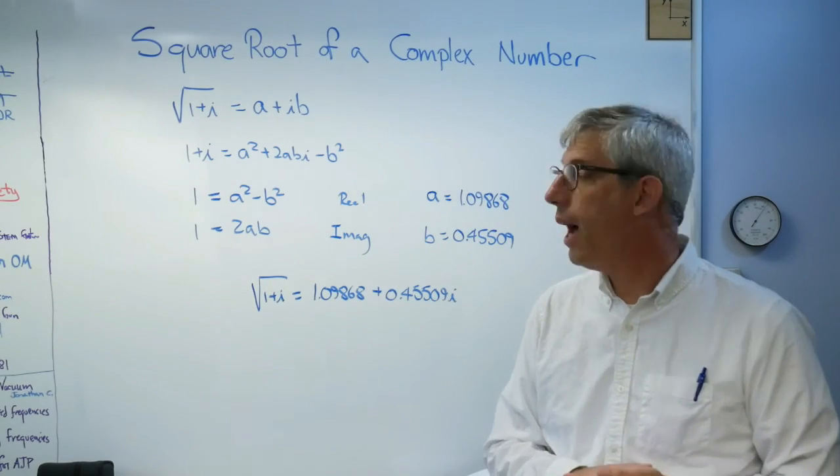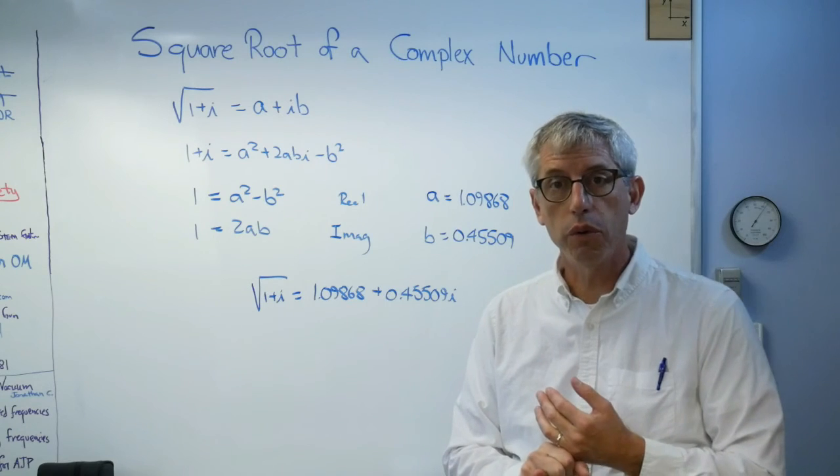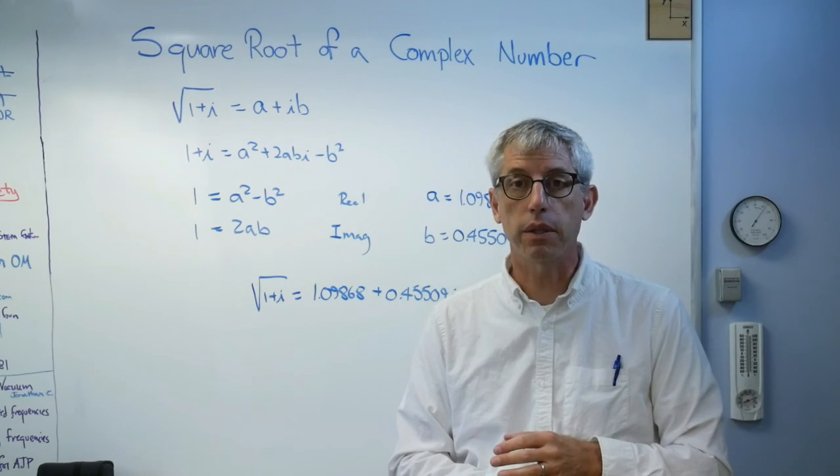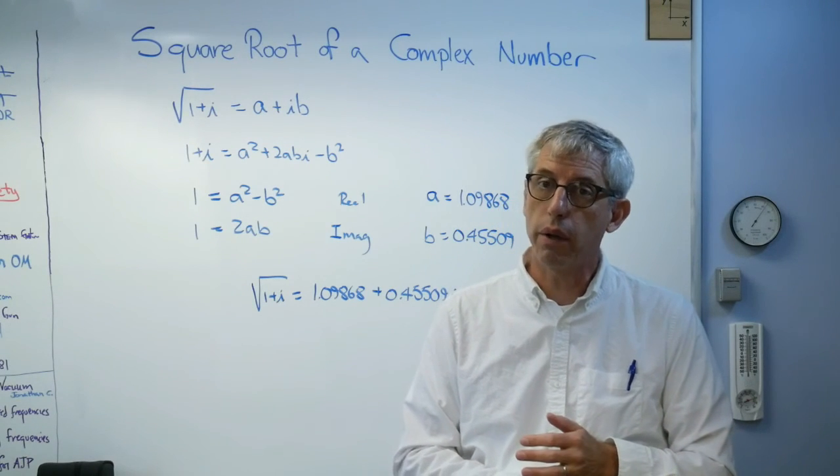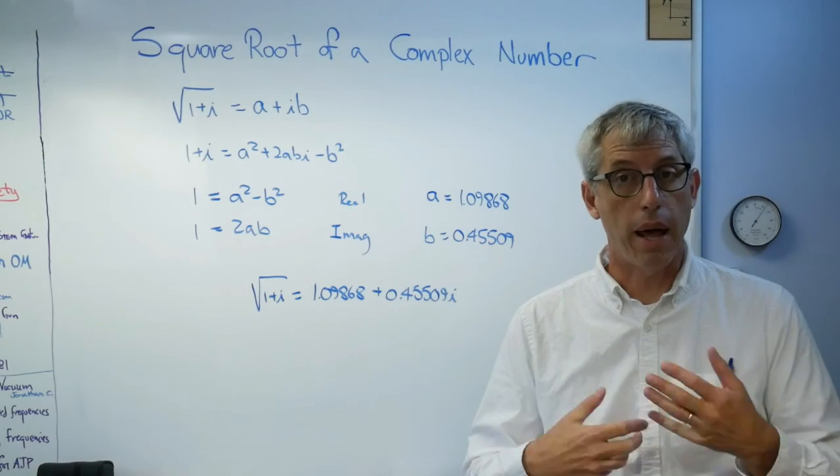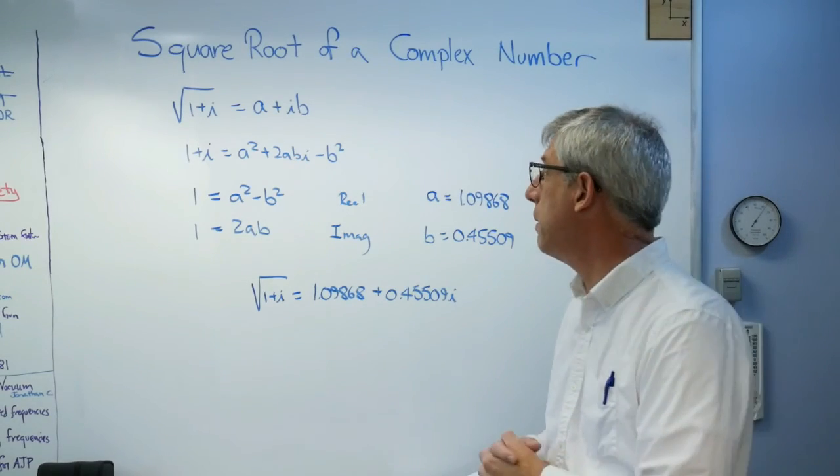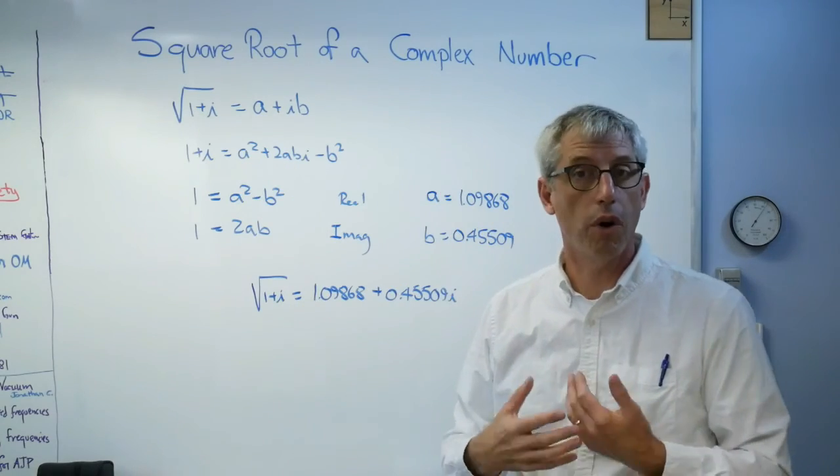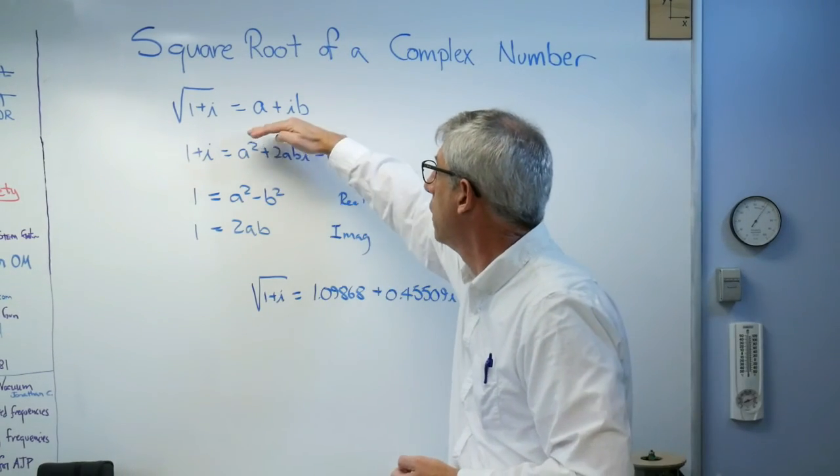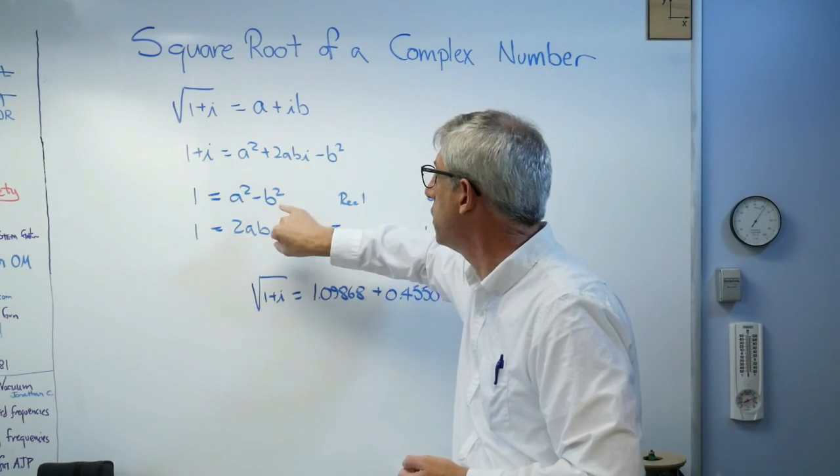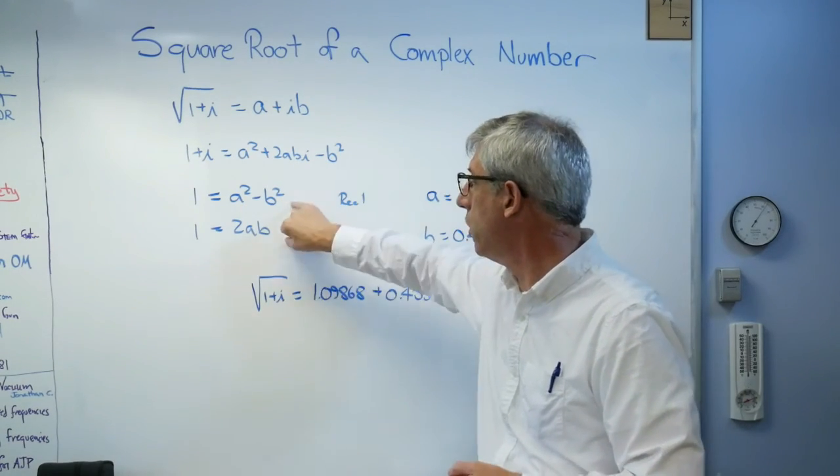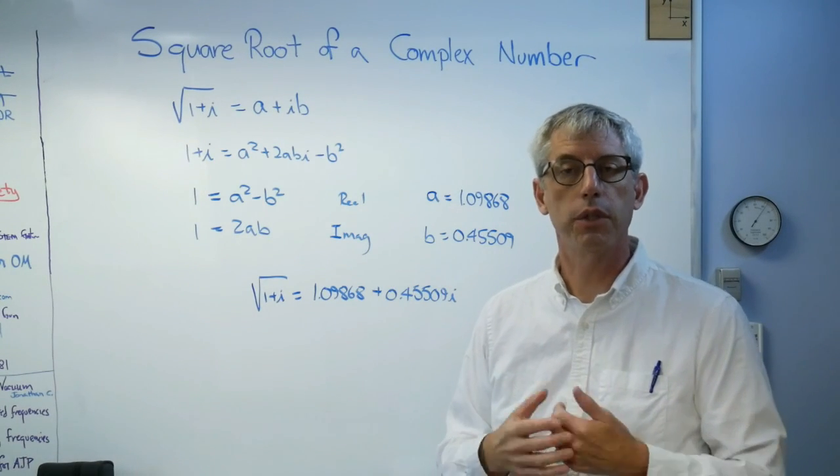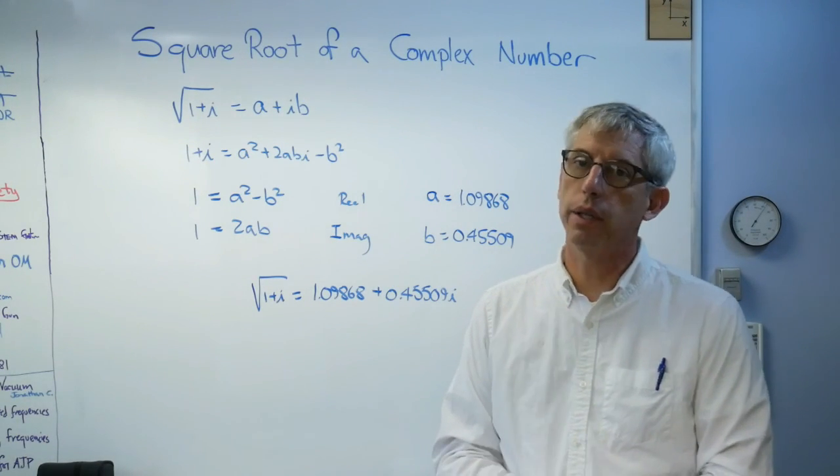Now you have it. Number one, square root of an imaginary or a complex number, absolutely a thing. That's something that you may need to calculate. It's a legitimate mathematical entity in spite of the name imaginary. This process works for all imaginary numbers. You get this equation, you square both sides, you get two equations and two unknowns. They're nonlinear. And solve them to get the answer. So there you go. Hope this helps and I'll see you next time.